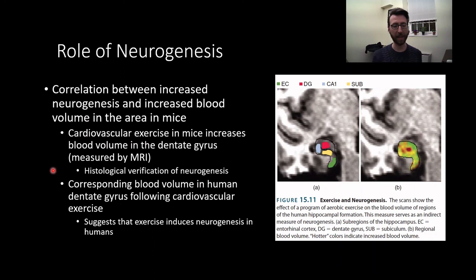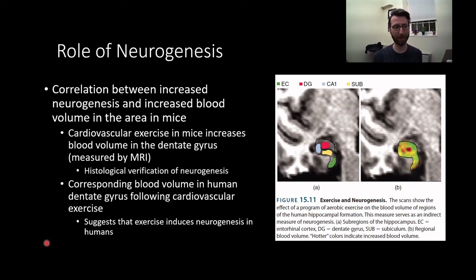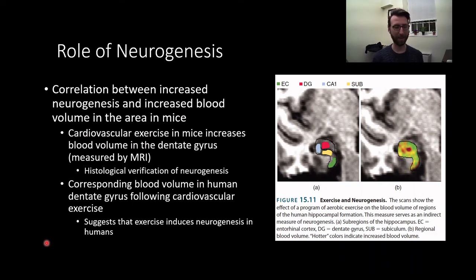There's no way to directly measure neurogenesis in humans — we can measure brain volume changes, but not new neurons being grown. However, we see a correlation between increased neurogenesis and increased blood volume in the area in mice. Cardiovascular exercise in mice increases blood volume in the dentate gyrus, measured by fMRI, and histological verification confirms that neurogenesis and blood volume are related. Similarly, blood volume increases in the dentate gyrus in humans following cardiovascular exercise, suggesting exercise could promote neurogenesis in humans as well. We also see improvement in depressive symptoms with exercise. So if you need more reasons to stay active — here's another: promote neurogenesis in your hippocampus.